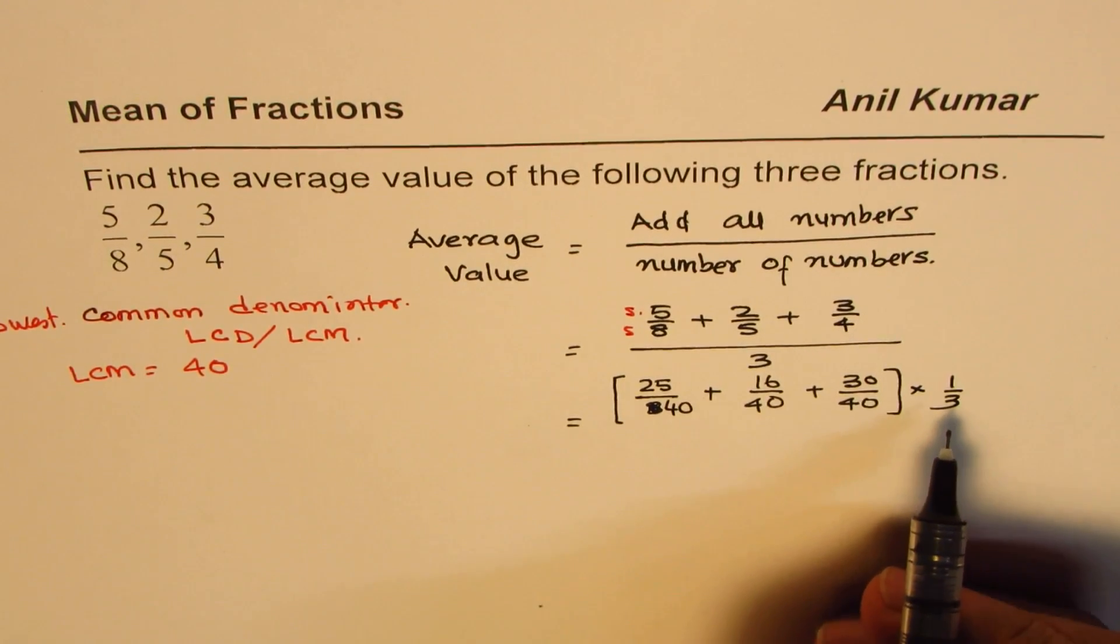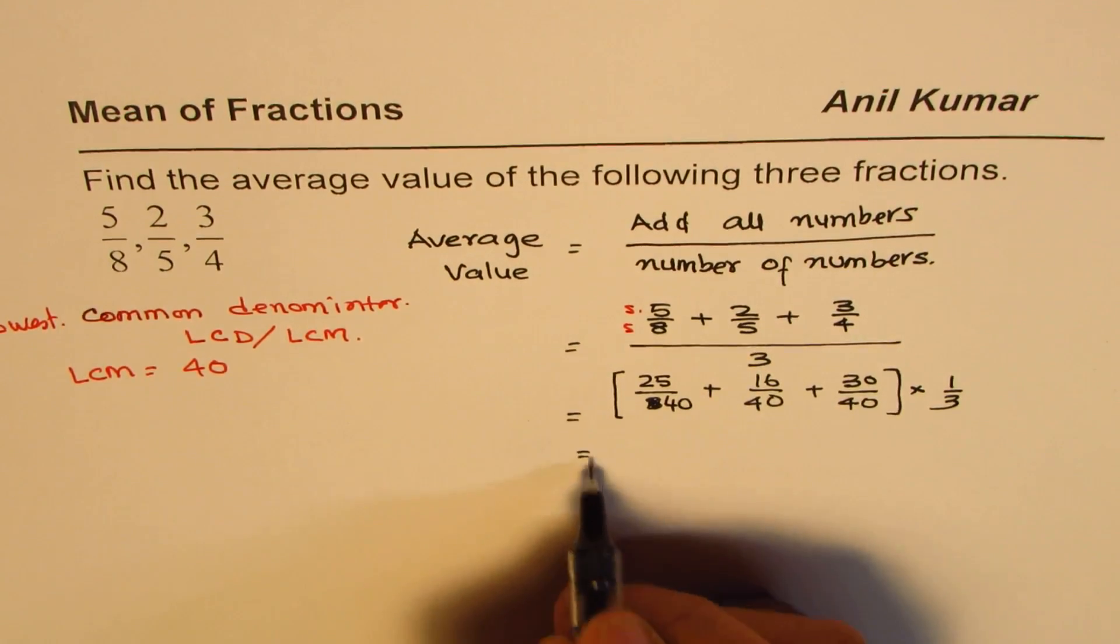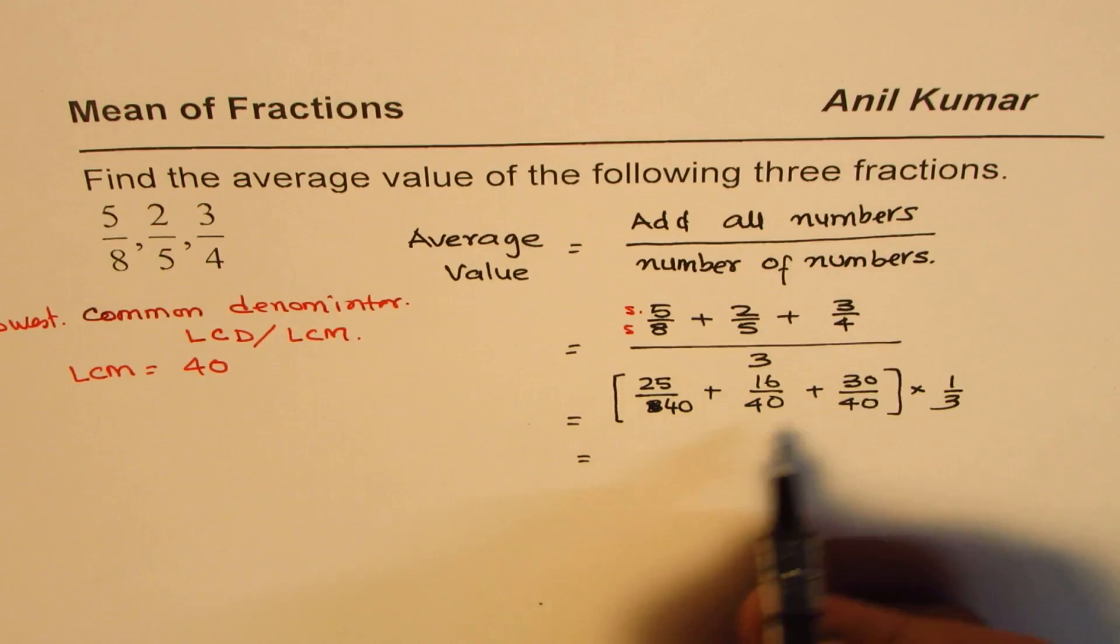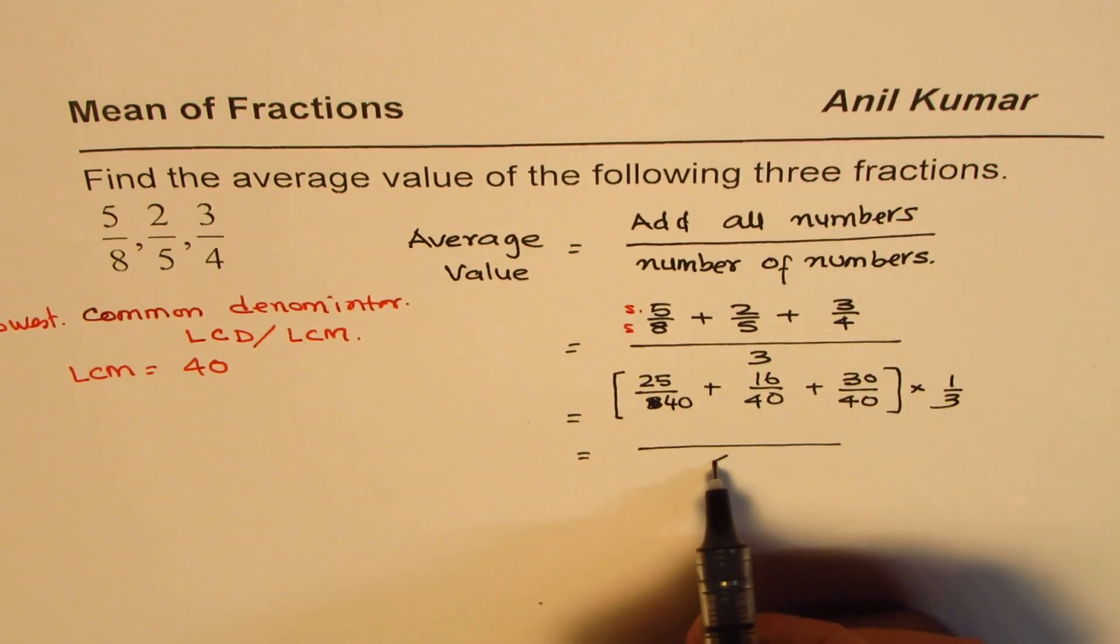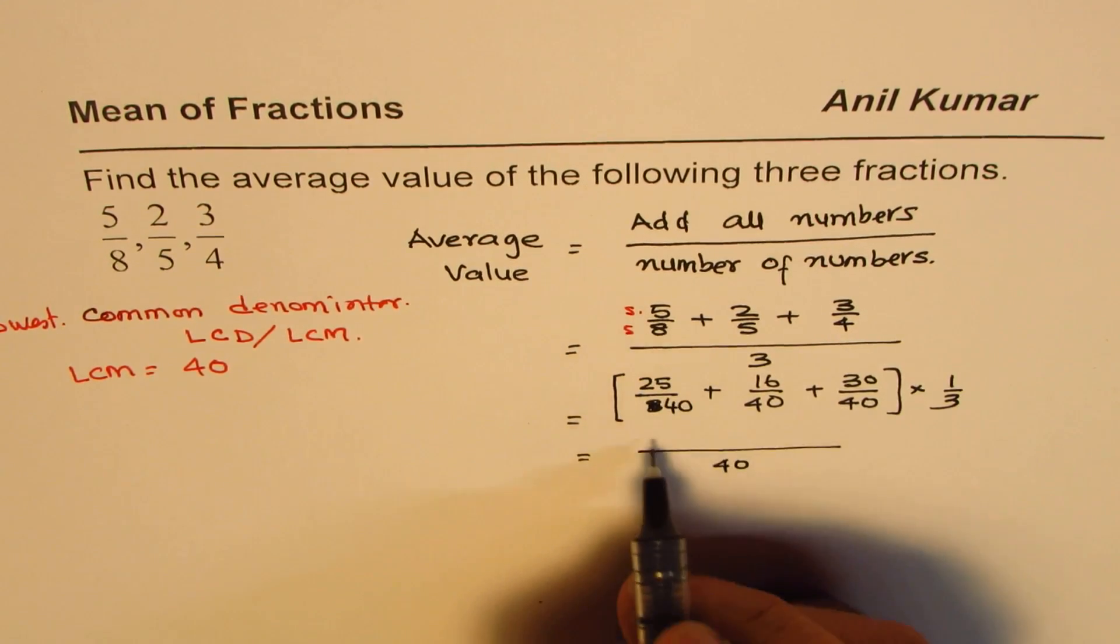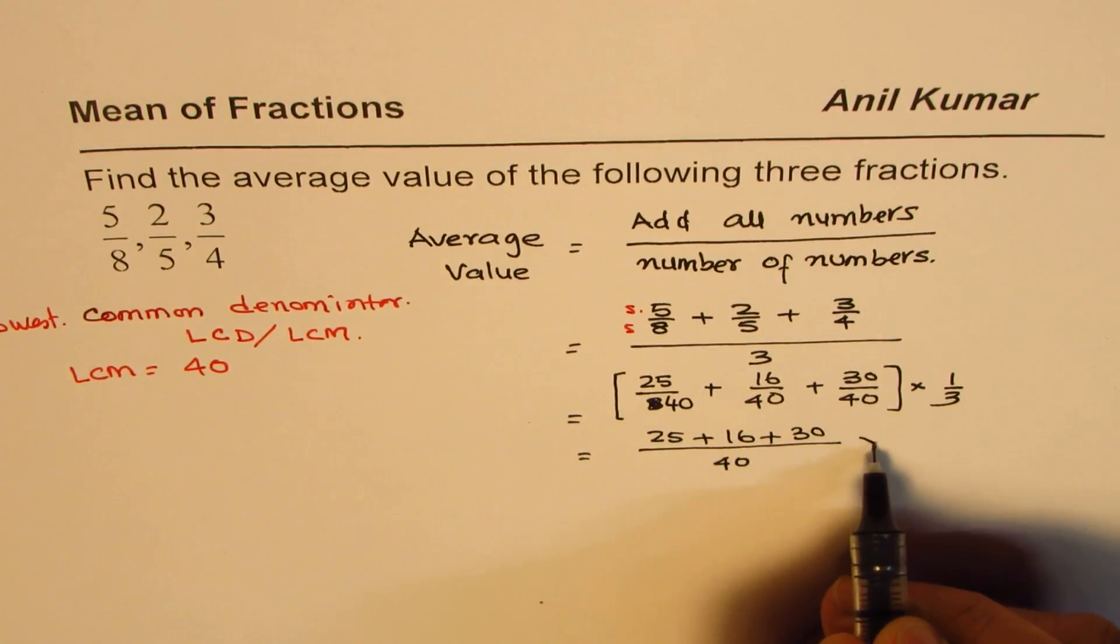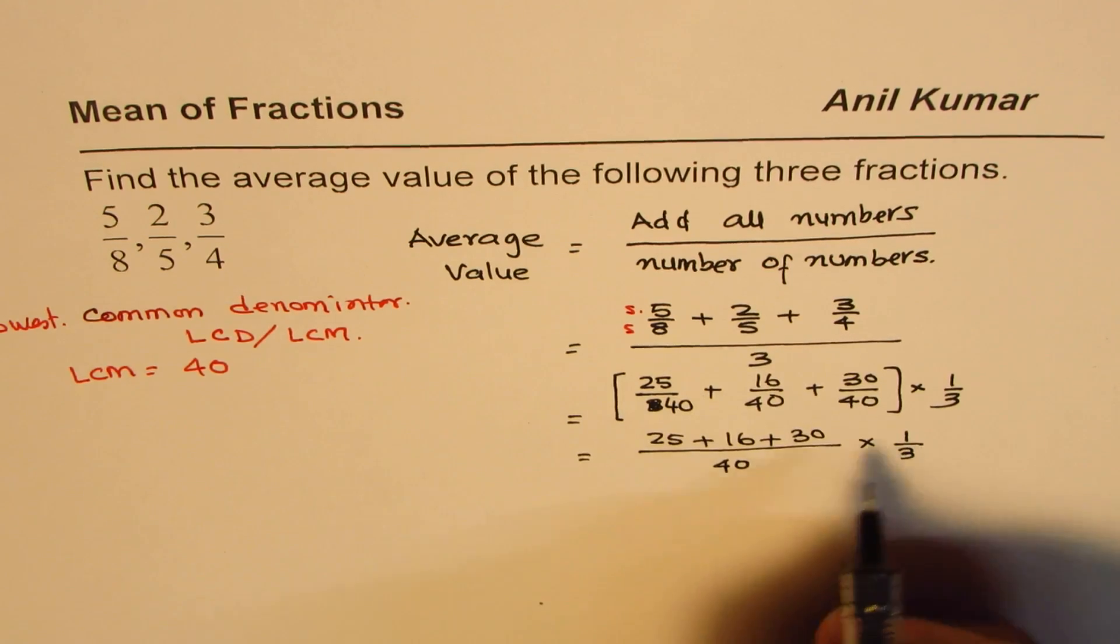Okay, so here let's add the numerators. So we have 40 as a common denominator. The numerators are 5 times 5 is 25 plus 16 plus 30, and we'll multiply this by one third, so that is divided by 3.